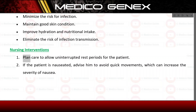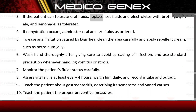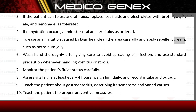Nursing interventions: plan care to allow uninterrupted rest periods for the patient. If the patient is nauseated, advise them to avoid quick movements, which can increase the severity of nausea. If the patient can tolerate oral fluids, replace lost fluids and electrolytes with broth, ginger ale, and lemonade as tolerated. If dehydration occurs, administer oral and IV fluids as ordered. To ease anal irritation caused by diarrhea, clean the area carefully and apply repellent cream such as petroleum jelly. Wash hands thoroughly after giving care to avoid spreading infection, and use standard precautions whenever handling vomitus or stools.